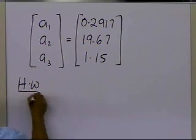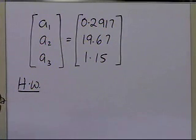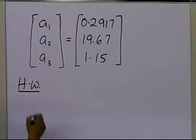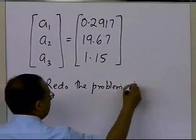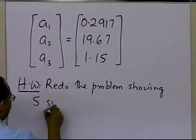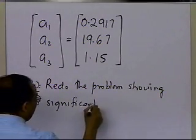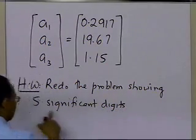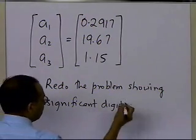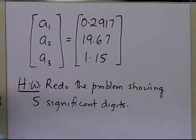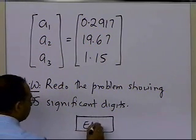As homework, I've been mentioning throughout this segment that I'm only showing four significant digits in my calculations. What I'd like you to do is redo the problem showing five significant digits in all intermediate and final results, and see whether you get a slightly different answer, which you should. That is the end of this segment.